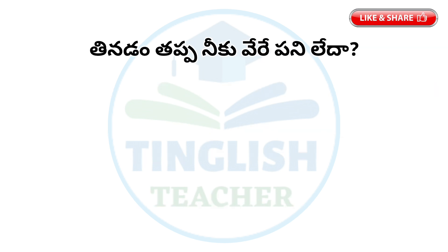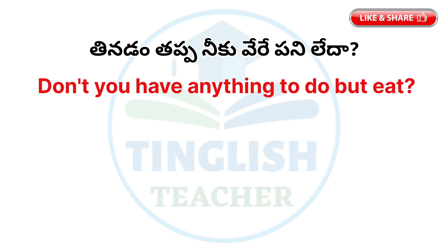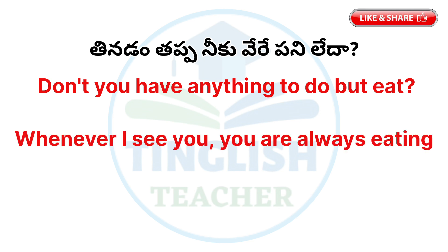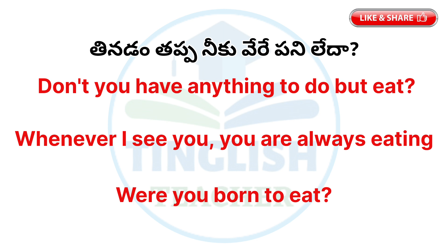The last sentence: Don't you have anything to do but eat? You can also ask: Do you have anything to do but eat? For example: Whenever I see you, you are always eating. If you want to ask more pointedly: Were you born to eat? Or: You were born to eat.